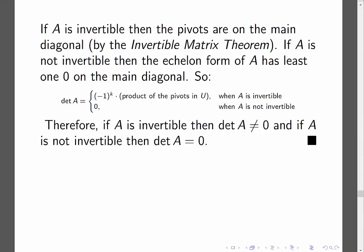Now it looks like I kind of end things rather quickly. Therefore, if A is invertible, the determinant is not equal to 0. And if A is not invertible, then the determinant is equal to 0. Now, I've put my little black box there saying that I have ended the proof.